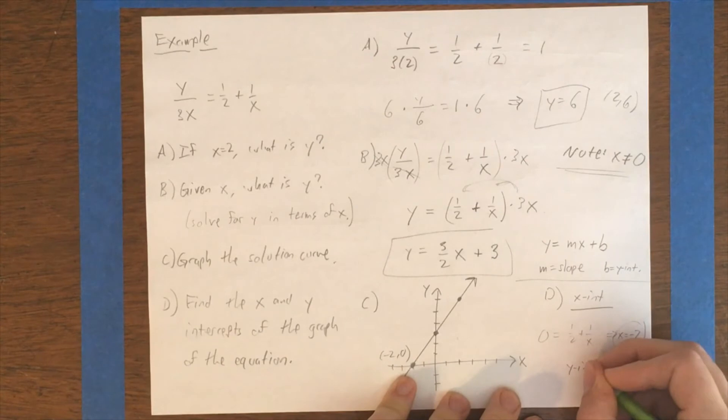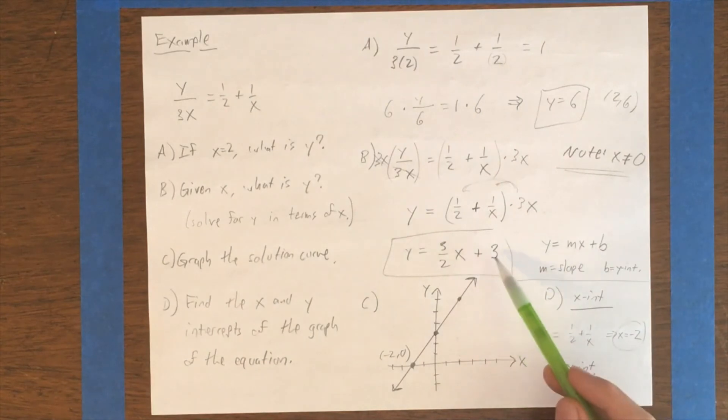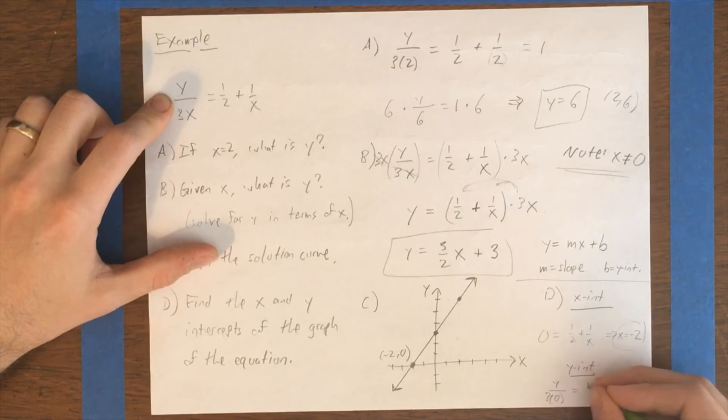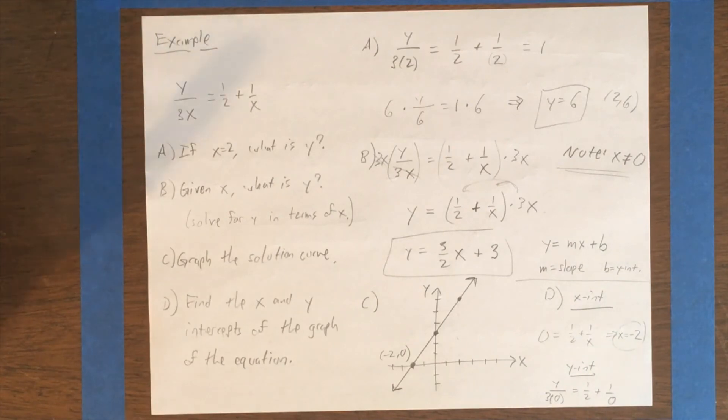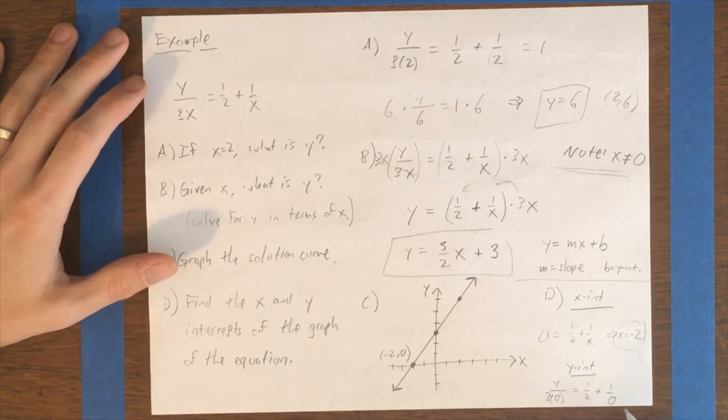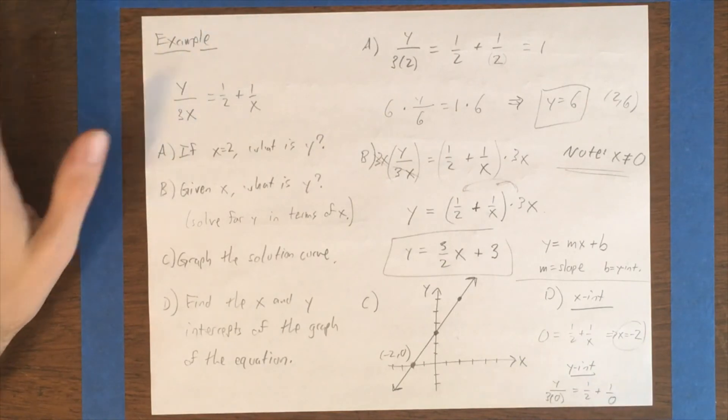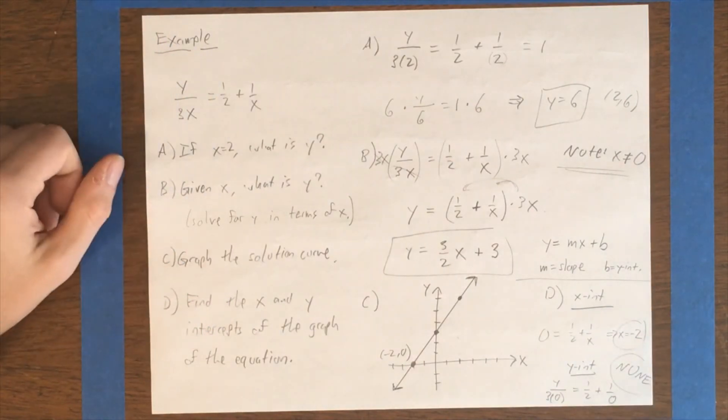But the y-intercept is a bit weird. Our y equals mx plus b format suggested that it should be at 3, right? The plus b here is meant to tell us the y-intercept. But note, if you put in 0 for x, we have a problem, right? Division by 0. In fact, remember how we noted right at the beginning that actually x shouldn't ever equal 0? Yeah. So actually, there's an issue here, which is that this is an undefined scenario. We have this division by 0 problem when x is 0. So we don't have a y-intercept. We could just write none.